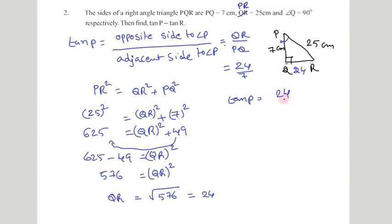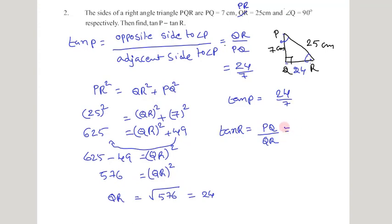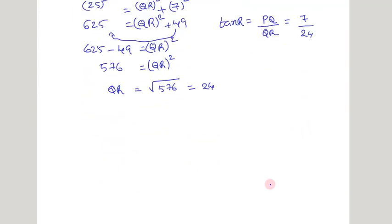In the same manner we find tan R. Tan R is defined as the opposite side to angle R divided by the adjacent side to angle R. The opposite side to angle R is PQ, and the adjacent side — other than the hypotenuse — is QR. Substituting the values: PQ is 7 centimeters and QR is 24 centimeters, so tan R equals 7 by 24. Now we have to find the value of tan P minus tan R.